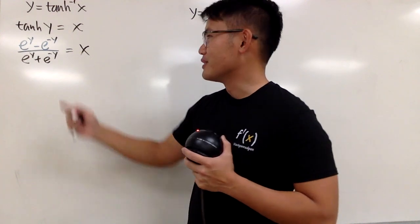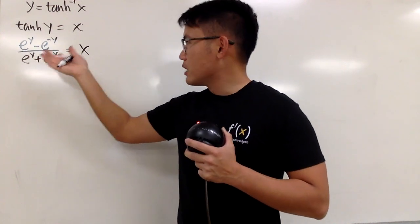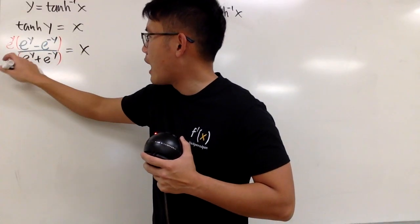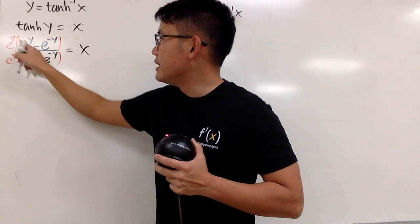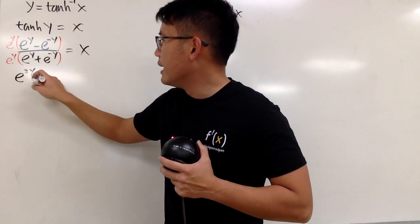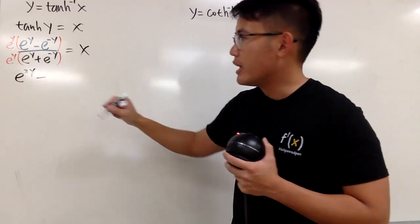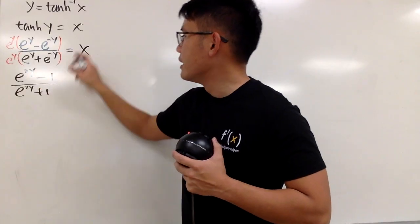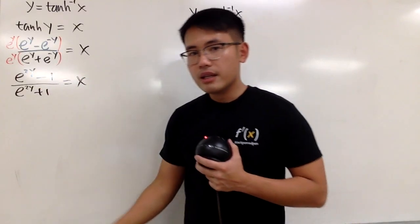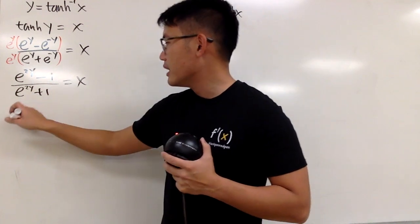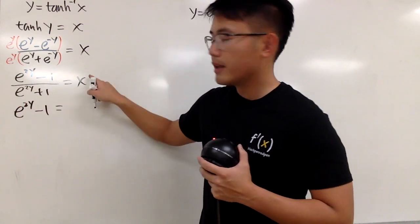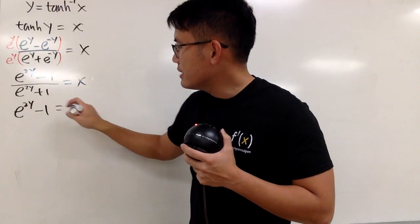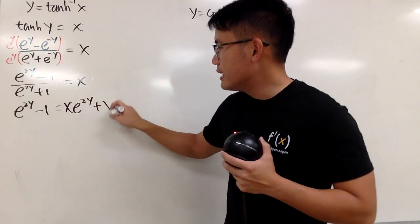Let's do algebra to isolate y. We can clear the negative exponent by multiplying the top and bottom by e to the positive y. On the top, we get e to the 2y, and then minus 1. On the bottom, we get e to the 2y plus 1. This is still equal to x. Next, multiply both sides by the denominator. We get e to the 2y minus 1 equals x times e to the 2y plus x, distributing x.